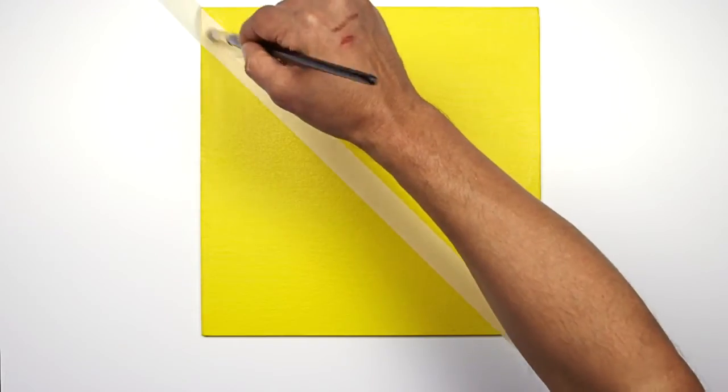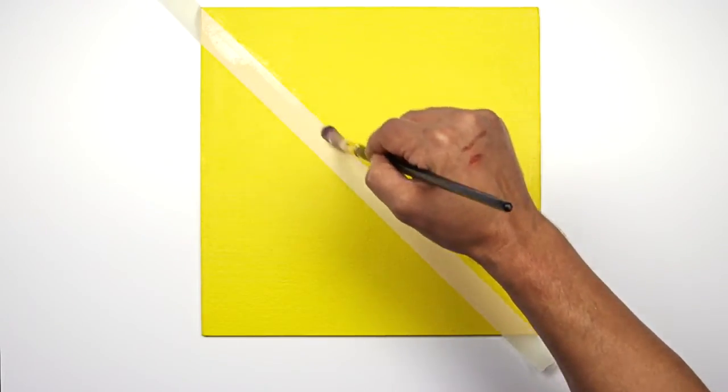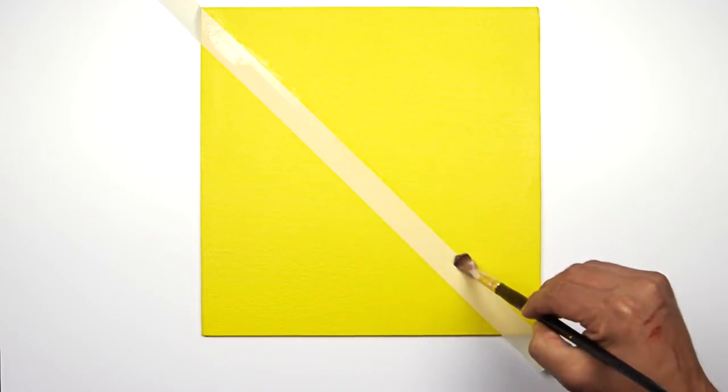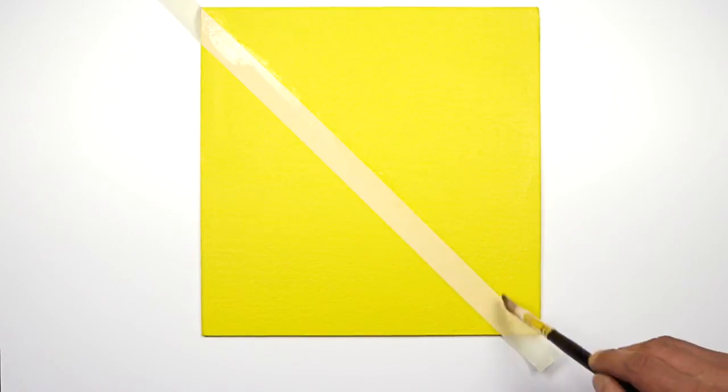To prevent paint bleed, apply a thin layer of Winsor Newton matte medium all along the edge of the masking tape. You don't want to add too much, but you just have to make sure that you don't miss any area of the masking tape.